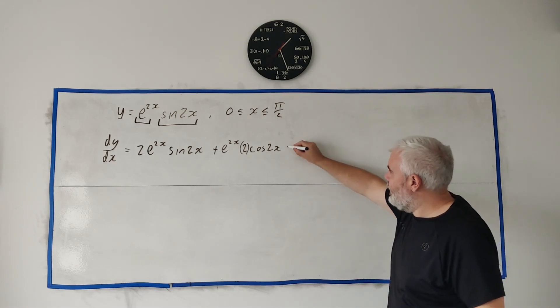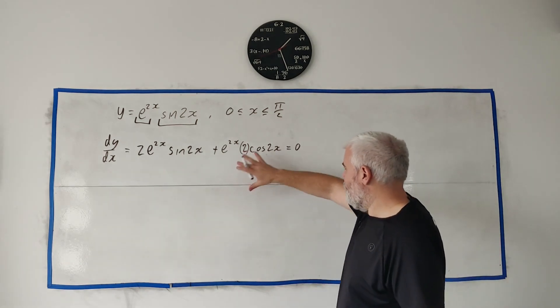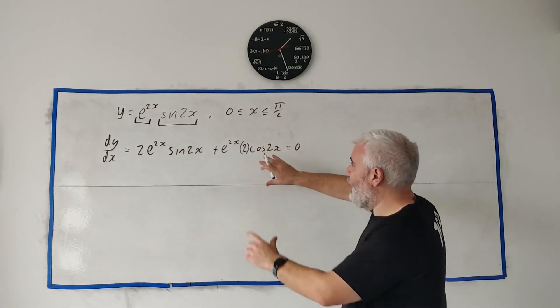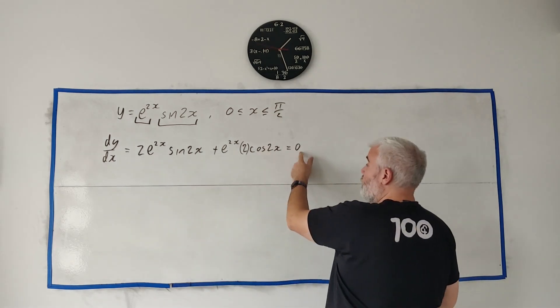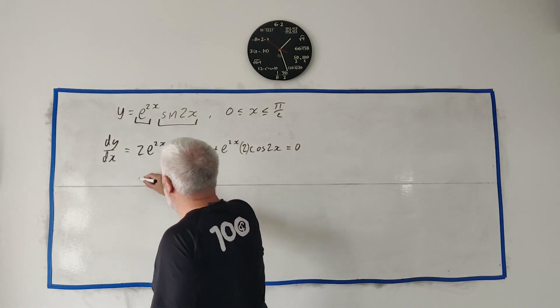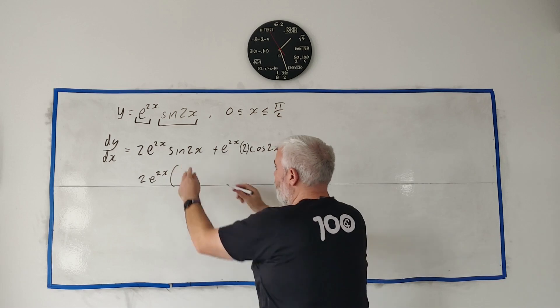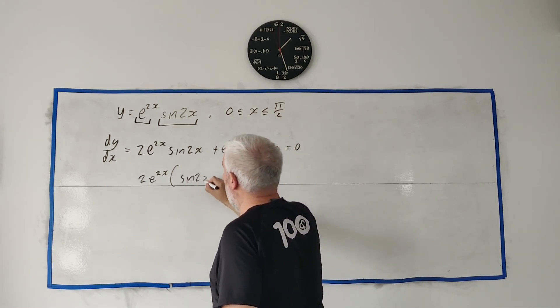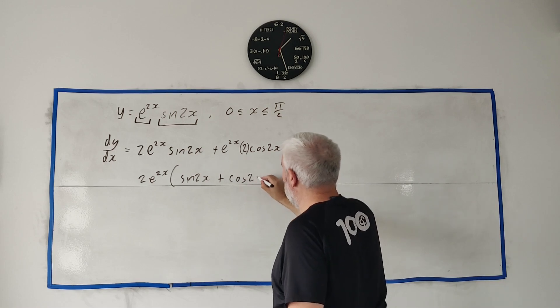And we know all of this equals zero because it's a stationary point. So let's try and expand things out of this. There's common terms in both of these terms. 2e^(2x) goes in the bottom. 2e^(2x) goes into this one sin(2x) times and it goes into this one cos(2x) times.